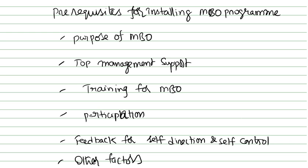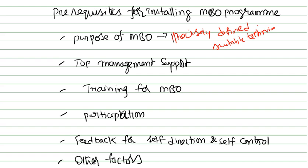The purpose of MBO should be precisely defined and suitable techniques must be emphasized and used. Just as if you are joining an MBA with the purpose of becoming an HR — masters is required for that purpose. You cannot join casually just because there is a free seat. There must be a clear purpose for joining.